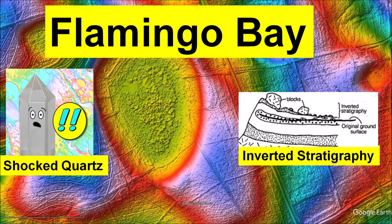Welcome to another presentation about the origin of the Carolina Bays. Today I will be discussing Flamingo Bay in South Carolina, which contains shock fractured quartz indicating the bay experienced high pressure during its formation. The sandy rim of the bay also shows inverted stratigraphy, which corresponds to an overturned flap and adds support for the impact origin of the Carolina Bays.